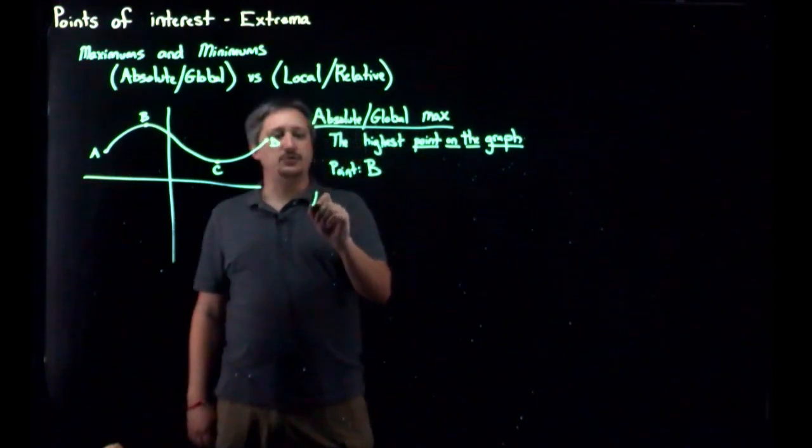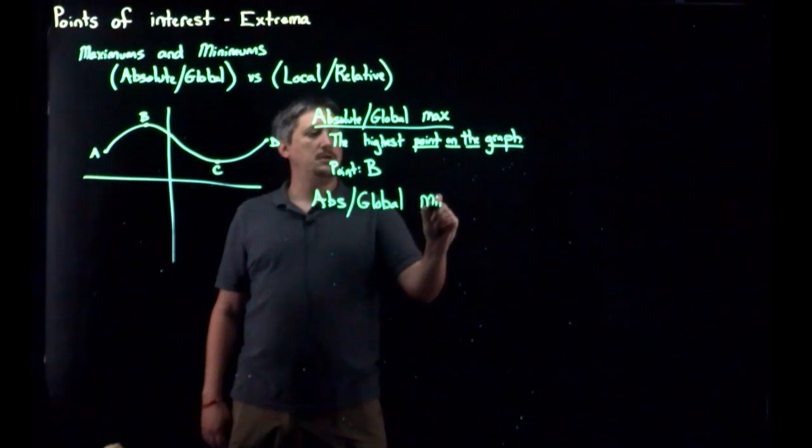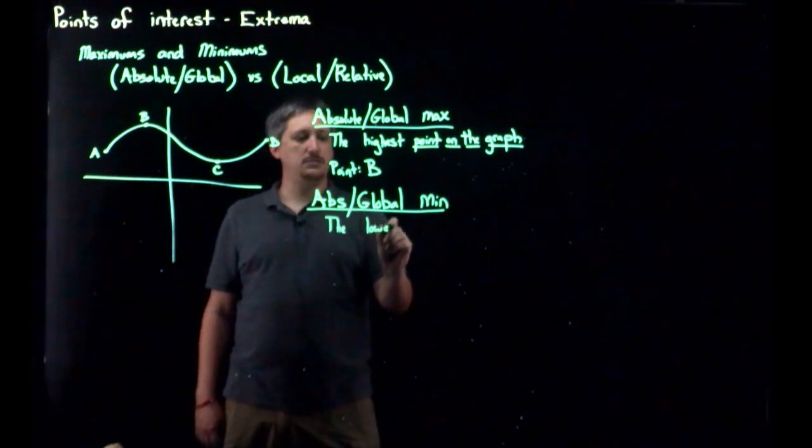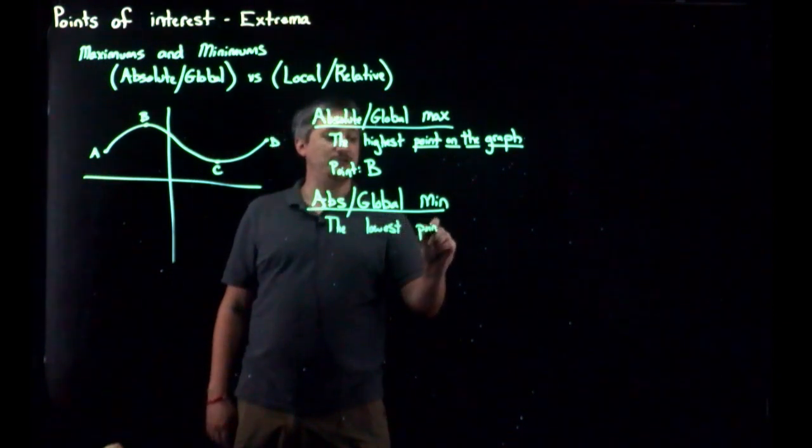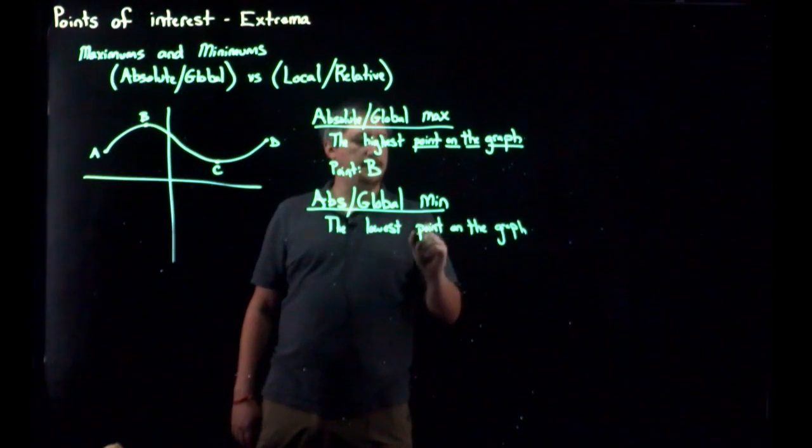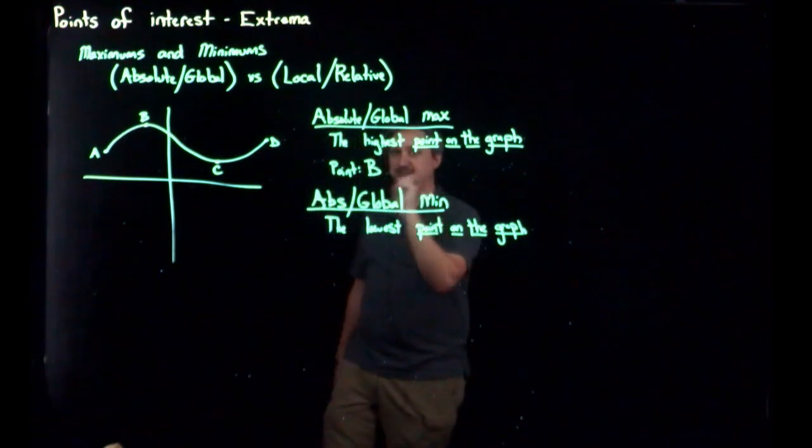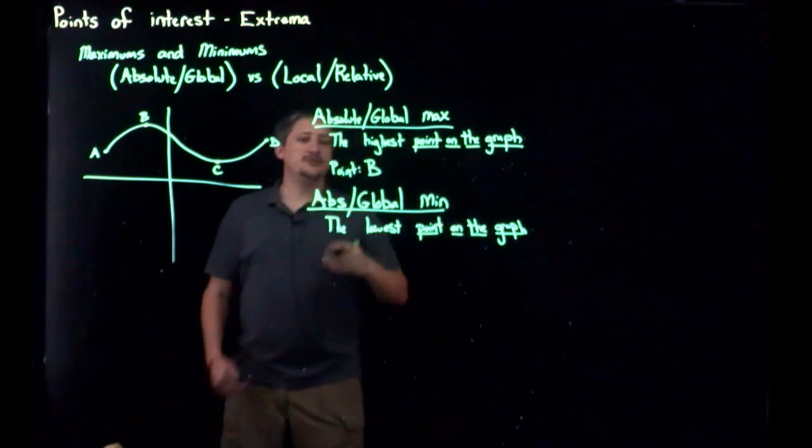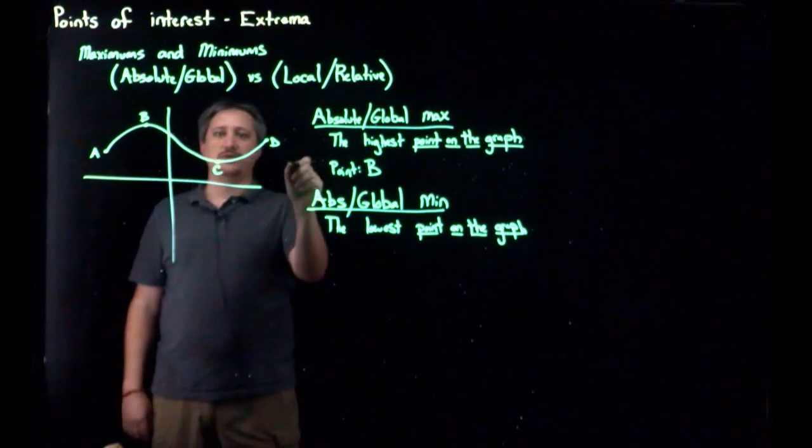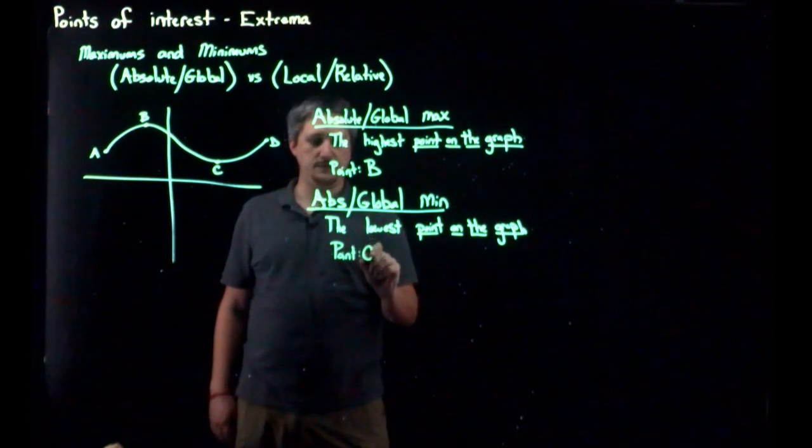Likewise, if I did the absolute or global min, it's the same idea, the lowest point. Again, I will stress this, point on the graph. So it has to be something that is actually there, that you can point to and go that point right there, that one specifically. So if I look at my example here, I want the thing that's lower than all the rest. Well, here I have something that is lower than the rest. So this would be point C.